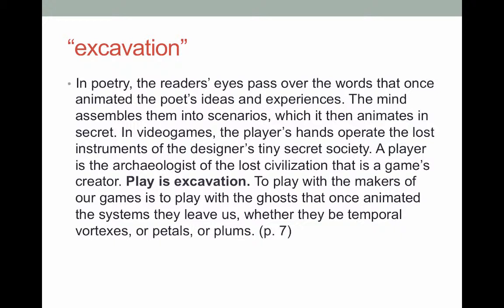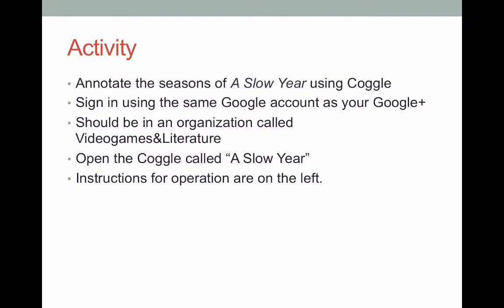What we did last week with poems was annotate, so we're going to try annotating this week. Since I can't put the game into a word document, we have a different system: a software called Coggle. Go to coggle.it — not .com, just c-o-g-g-l-e dot it — and sign in with the same Google account you use for Google Plus. I've already invited you into an organization called 'Video Games and Literature.' You'll find a list of coggles you're invited to, and one should be called 'A Slow Year.'